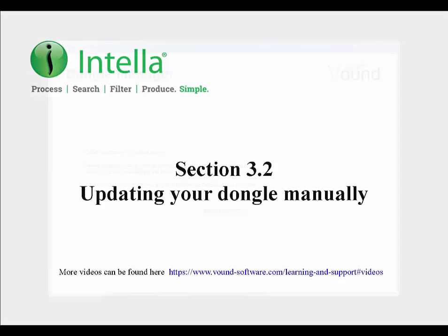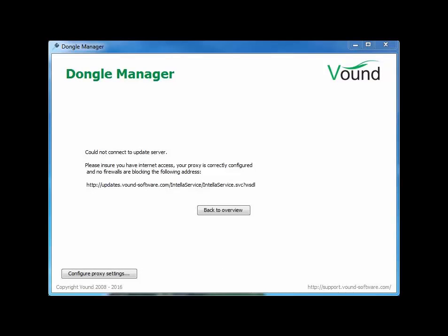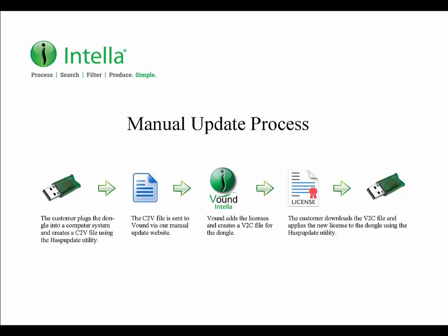It is possible that your dongle may not update using this automatic process. The automatic process is dependent on the type of products that you have on your dongle and other factors. We have developed a manual method which you can use to update your dongle if this is the case. The manual update method is also used by customers who have security constraints on their network or whose dongles are plugged into servers which do not have internet connectivity. For these customers, Dongle Manager won't work because of the restrictions. The manual update process involves manually extracting information contained on your dongle into a C2V file and submitting it to us via our Dongle Update website. Once received, we will add the licenses and provide you with V2C update files you can then apply to the dongle manually to update it.